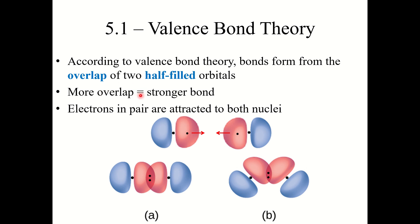Now the more overlap there is, the stronger the bond is. And as we talked about in chapter 4, the electrons in the pair are attracted to both nuclei.